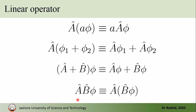A linear operator follows these rules. The last rule means that if there are two linear operators A-hat and B-hat and their product acts on a function, the closest one to the function will act on the function first, and then the other one acts on the result. So A-hat B-hat may not be the same as B-hat A-hat — in quantum mechanics the order of operators matters.